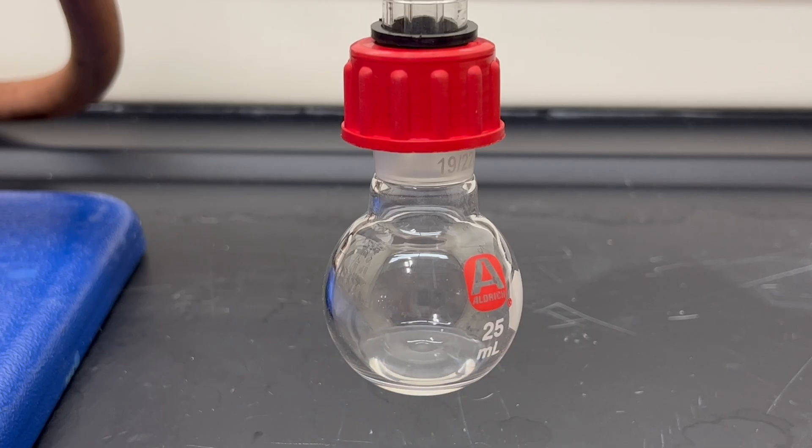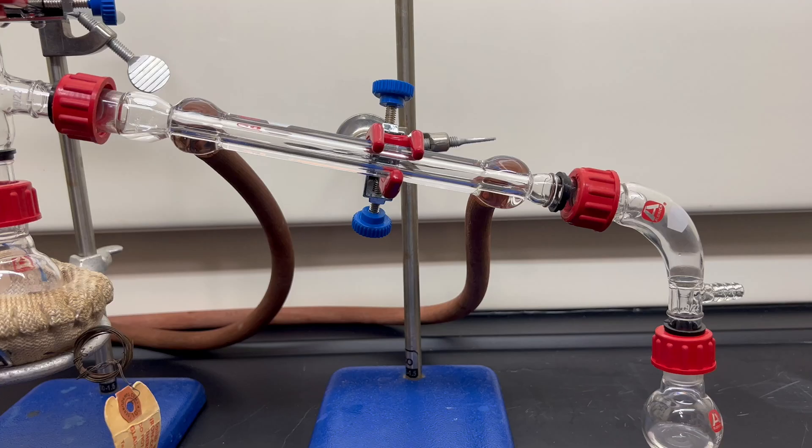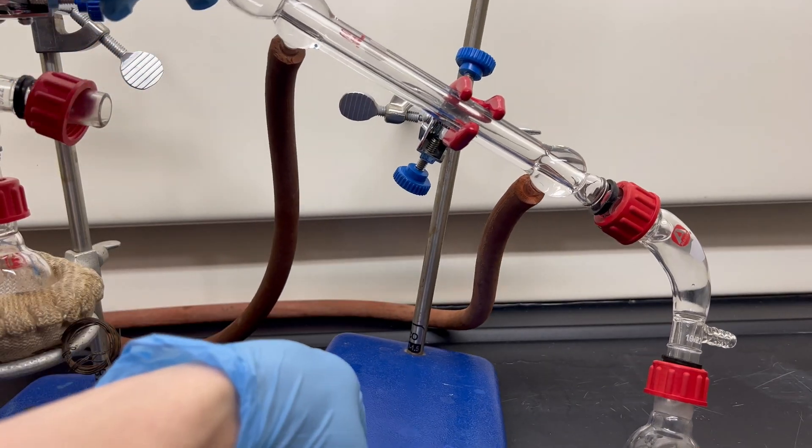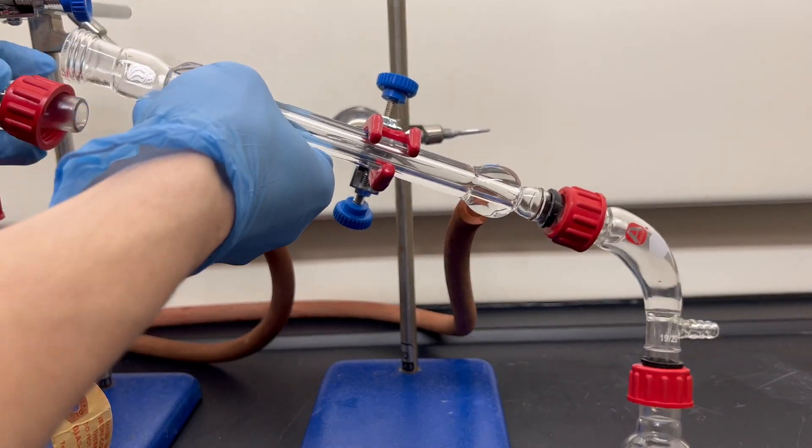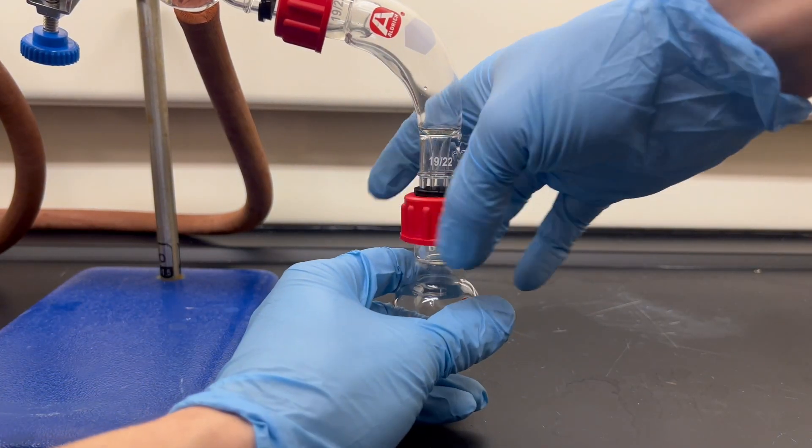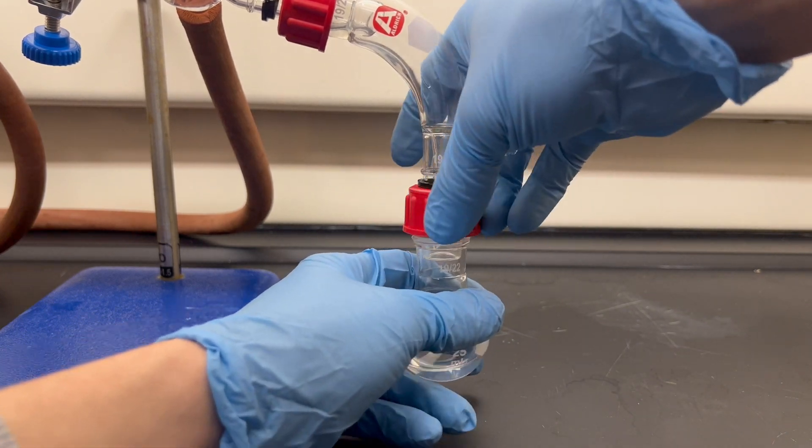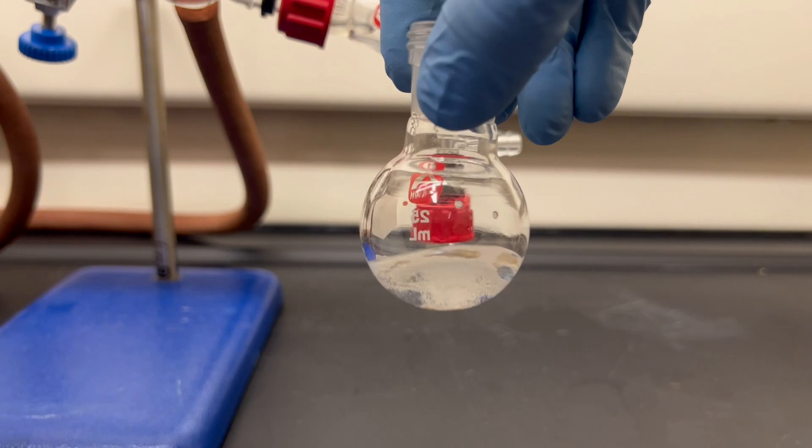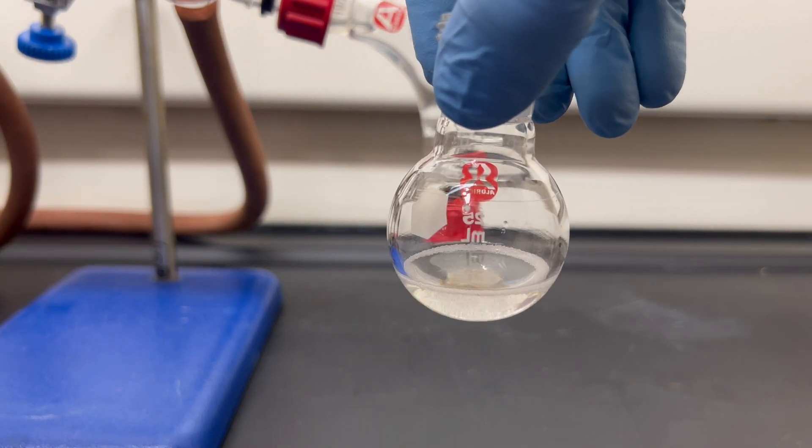The benzene coming over is a bit cloudy. This is most likely due to water as an impurity. The reaction is heated till no more benzene comes over. I then took off the flask and added a few molecular sieves to dry it out. This removed any of the cloudiness that was left over.